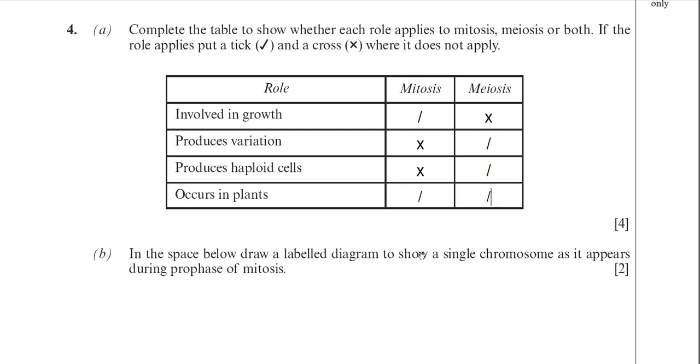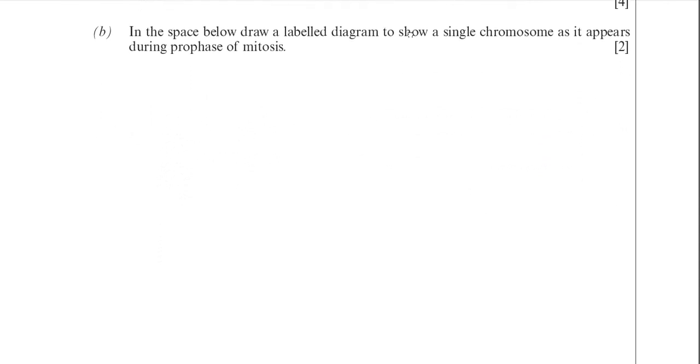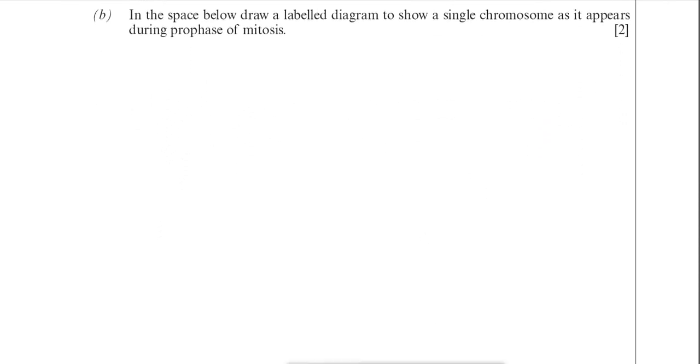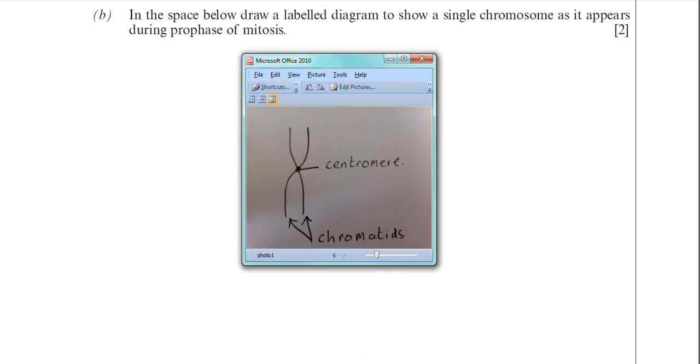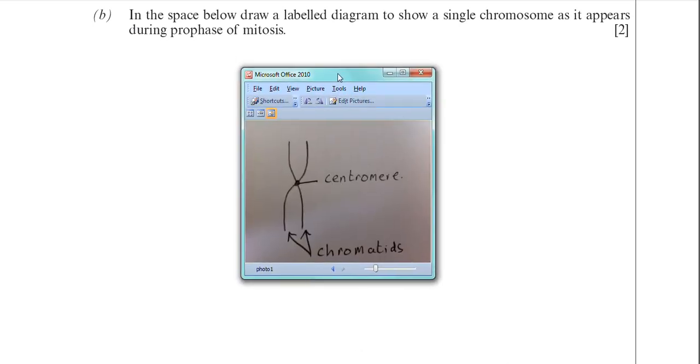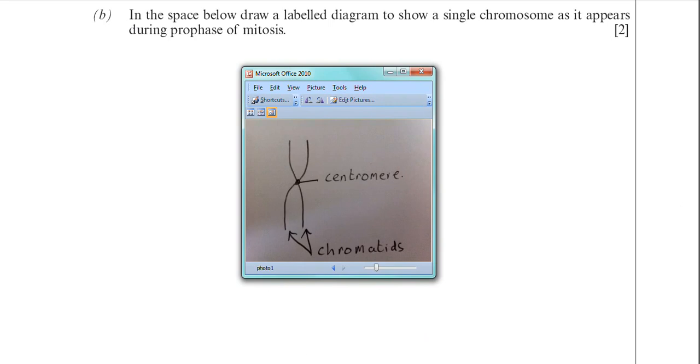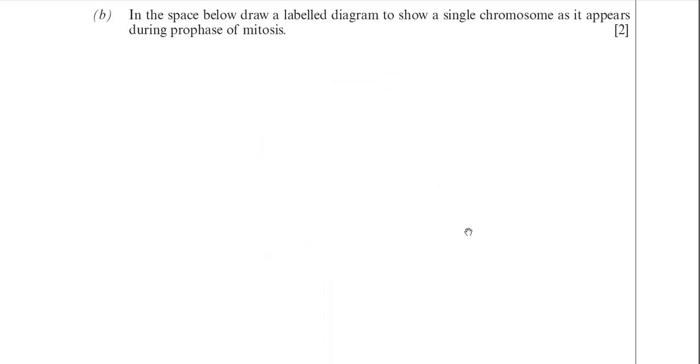So that's the table completed. I think easy marks there. So moving on now. You're asked to draw a chromosome, how it would appear during prophase of mitosis. So I've drawn a chromosome for you. You can see it on the screen now. You can see it's got two chromatids. And they are joined by the centromere. You don't need to be any more detailed than that. But that would be perfectly acceptable for two marks.